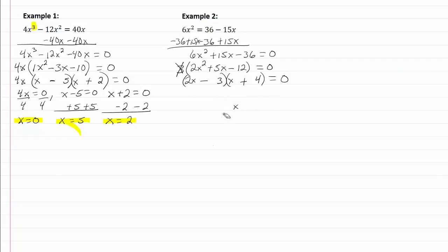Now that I have that factored, I can set each one of those equal to zero, so I have 2x - 3 = 0, and x + 4 = 0.